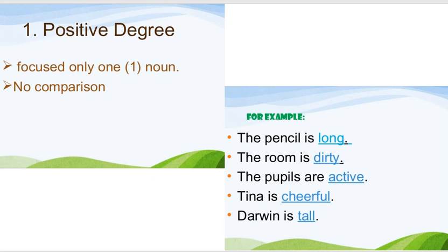Otaq çirklidir. The pupils are active. Şagirdlər fəaldır. Tina is cheerful. Tina şəndir. Darwin is tall. Darwin hündürdür.